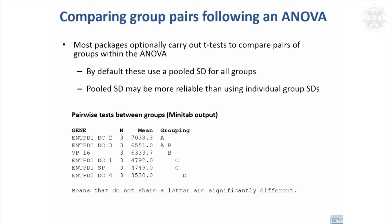We found that the genes were statistically different—we disproved the hypothesis that they were all the same. But we would want to go on and find out which of them are different from each other. Most packages will optionally allow you to carry out t-tests to compare pairs of groups within the analysis of variance.